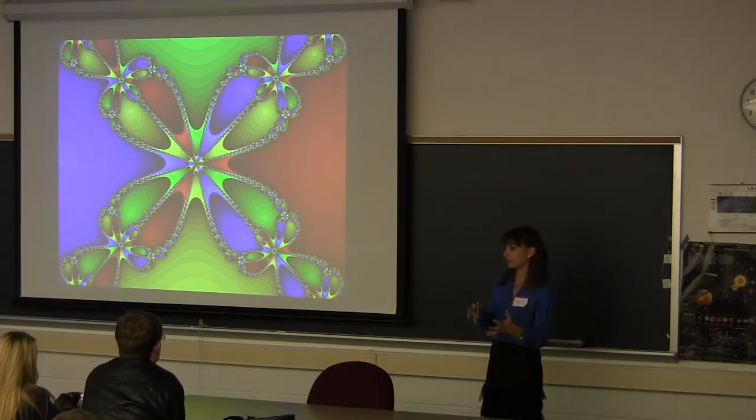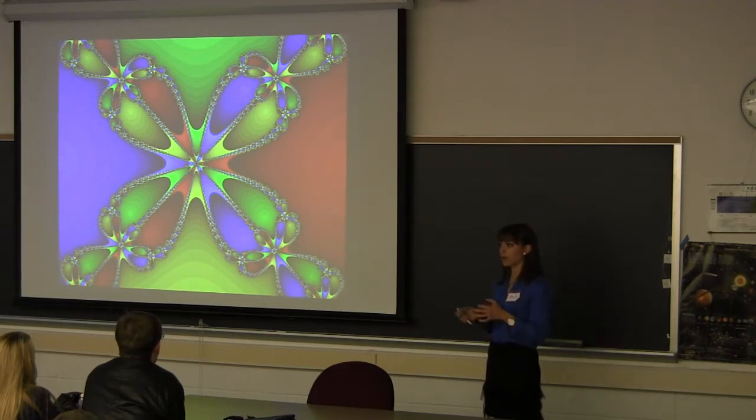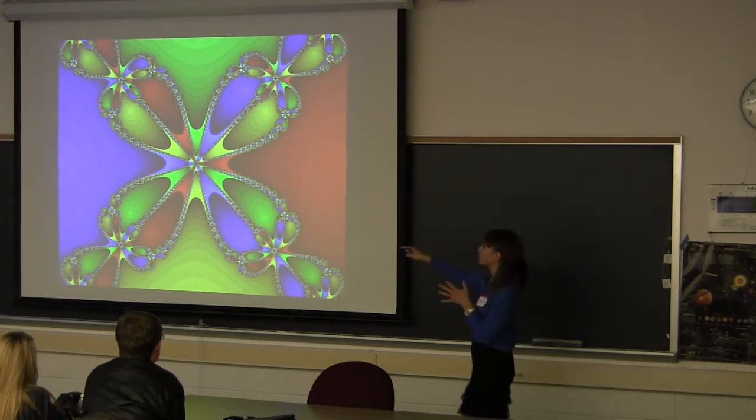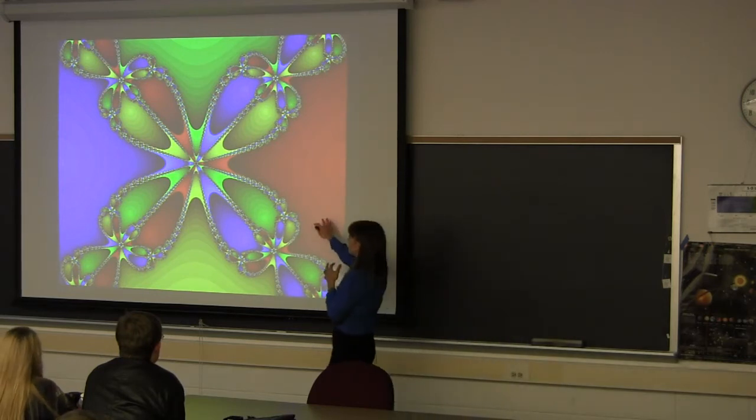And then it returns a sphere that's colored, depending on how many roots the polynomial has. So, if it's an order six polynomial, it's going to have six different colors. Then the colors are shaded, depending on how long it takes that root, or how long it takes the initial point to converge to a root.